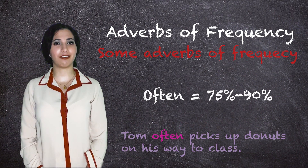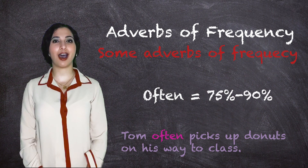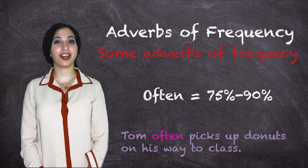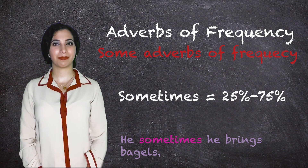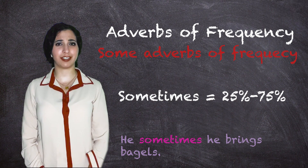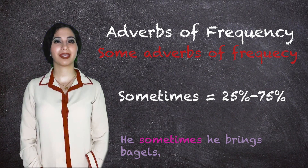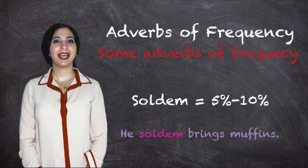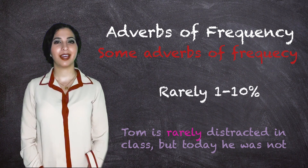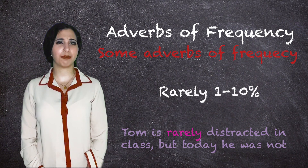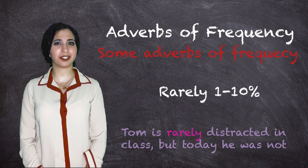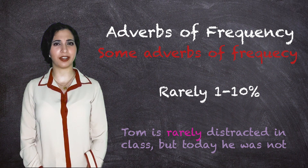Often is 75%. Tom often picks up donuts on his way to class. Sometimes is about 25% of the time — he sometimes brings bagels. Seldom is 5%, and we can say he seldom brings muffins. Rarely is 1%. Tom is rarely distracted in class, but today he's not paying attention.